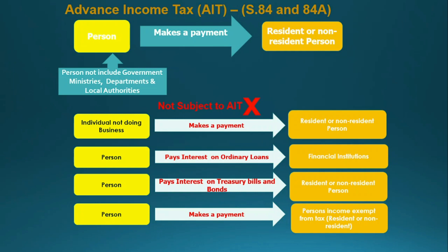According to Section 84-3, there are certain exclusions to consider when complying with Section 84A. You need not deduct withholding tax when making payments to another person in certain cases. The first exclusion is if you are an individual not doing a business — for example, if Mr. Pereira is making payments for rent and he is not doing a business, he does not need to deduct withholding tax or advance income tax from that rent payment.